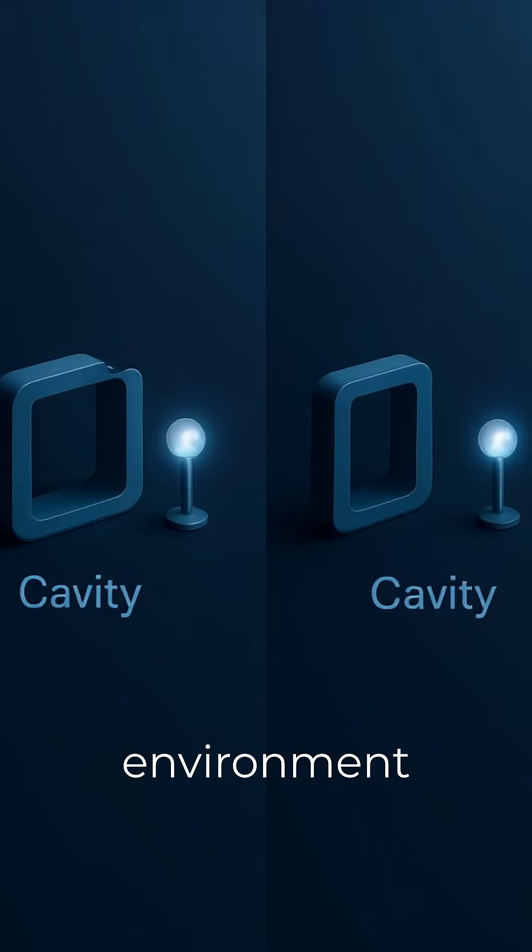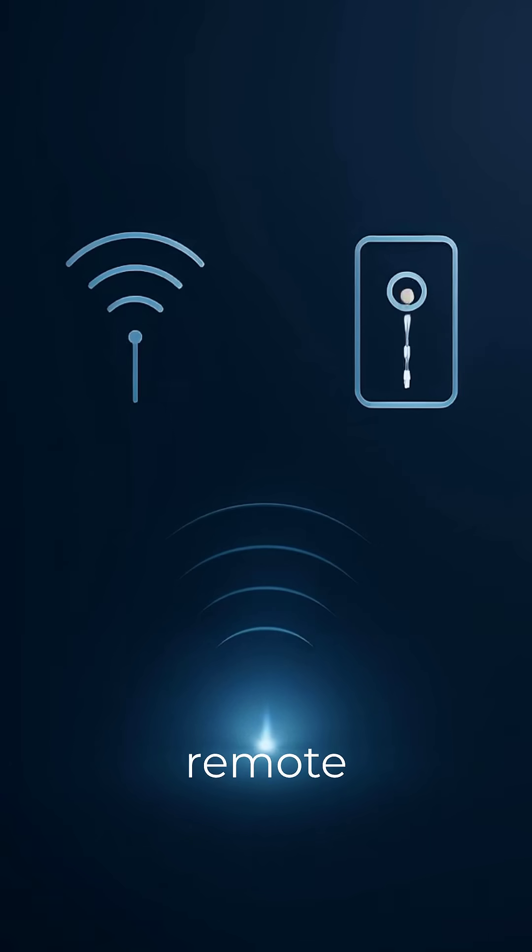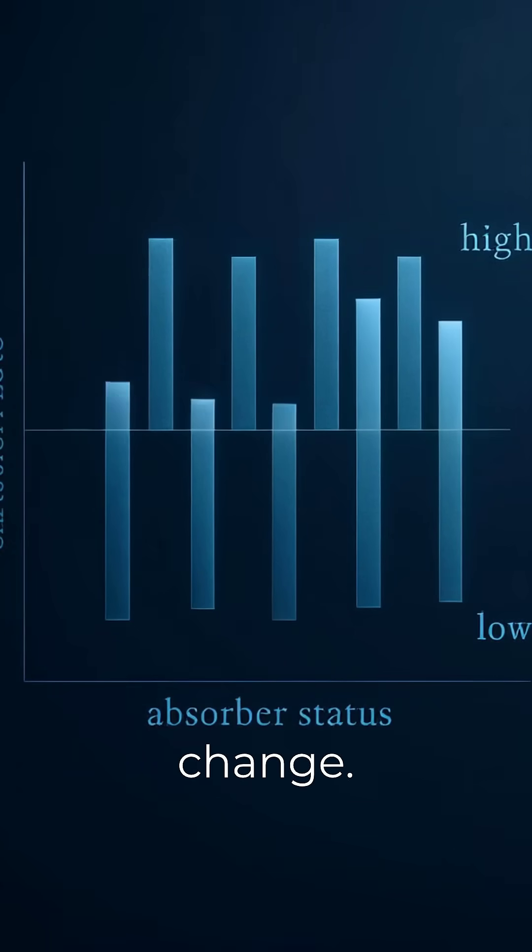Keep the source's local environment identical. Flip a remote absorber on-off, and the source's emission would change.